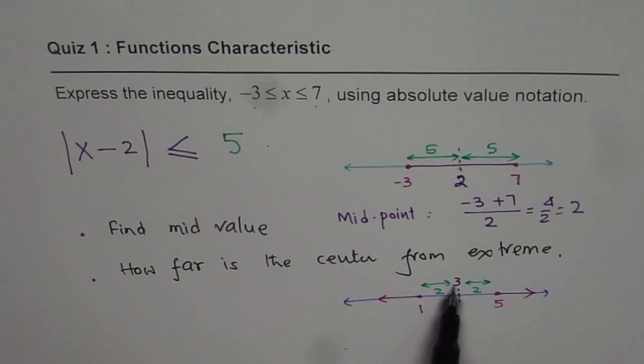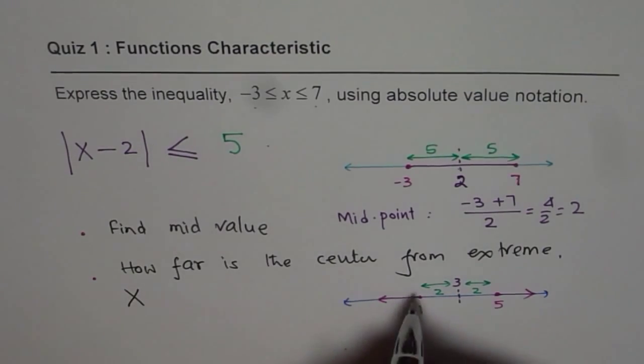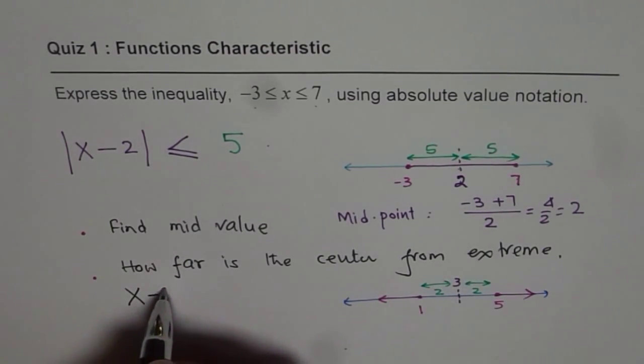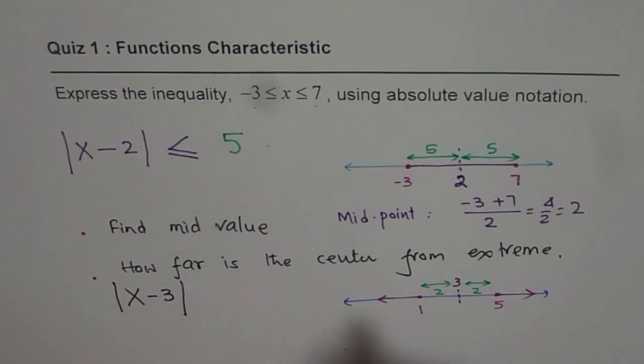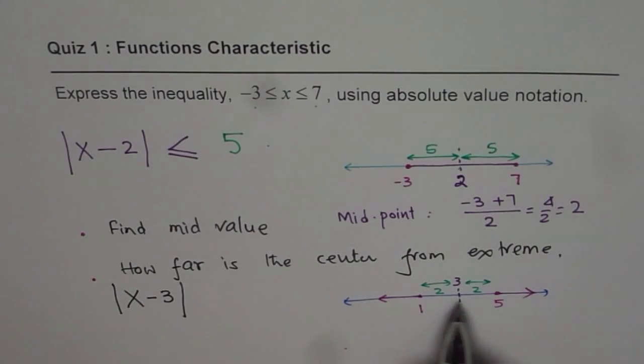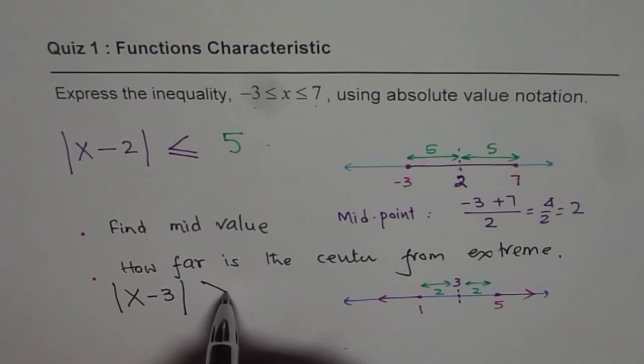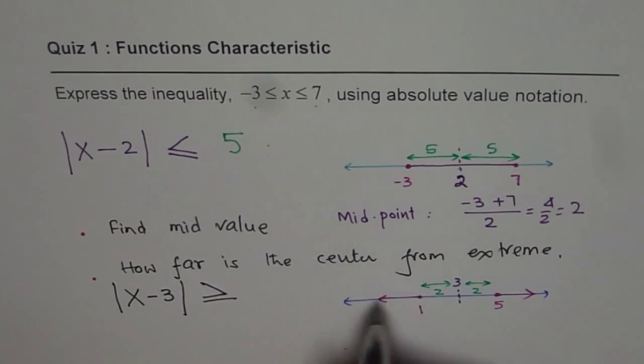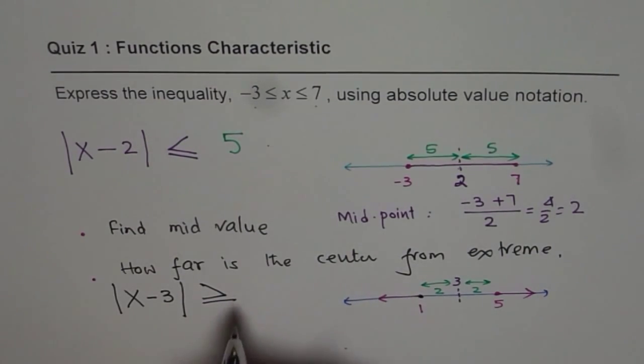Since you have moved to position 3, the absolute function should be |x - 3|. But you are going away—you do not want to be within. So it has to be greater than or equal to, because this point is included. At least 2 units away, so |x - 3| ≥ 2. That is how you write inequalities as absolute functions.